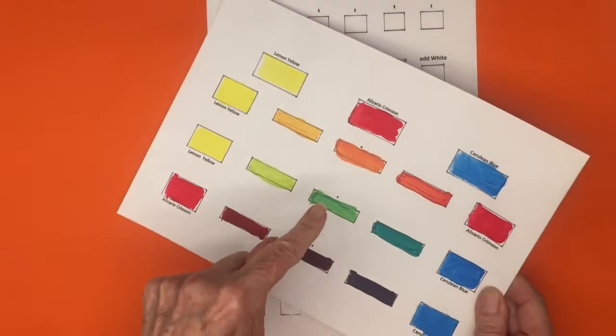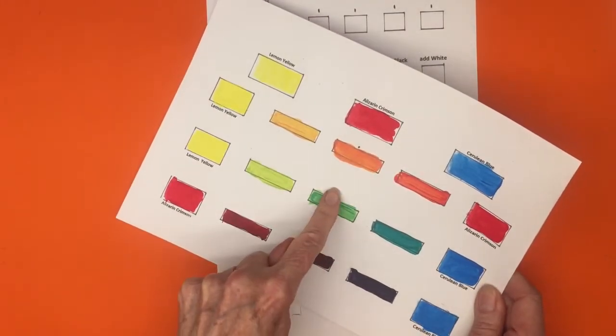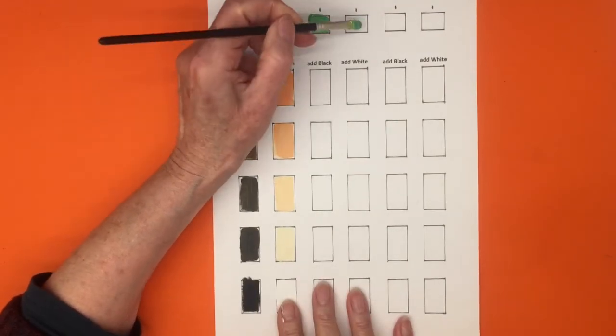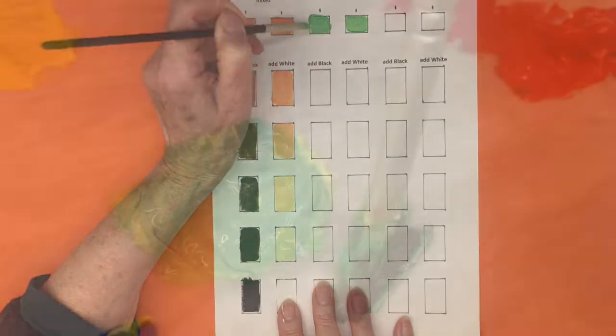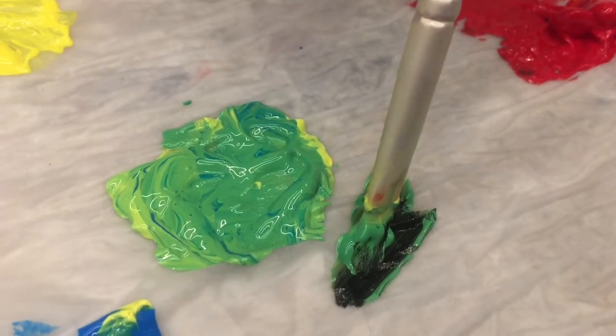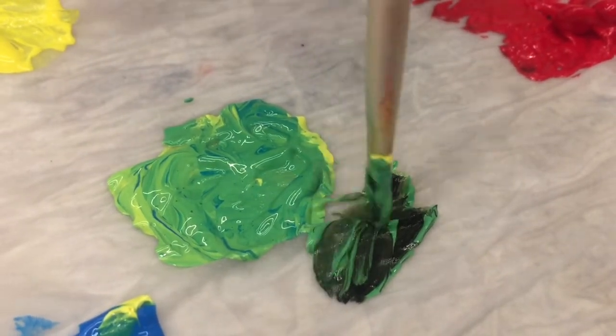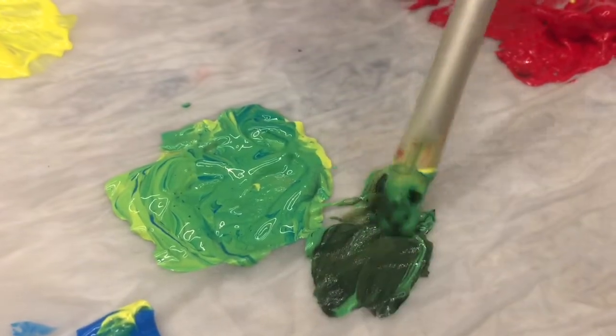Now use lemon yellow and cerulean blue to mix enough green to add white and black. Paint this in the top two boxes. Keep adding small amounts of black to your mixture until you reach the last box which should be painted black.